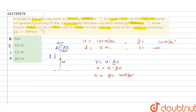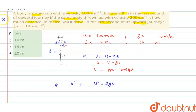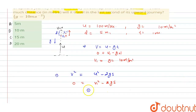We have time, initial velocity v1, final velocity, and g value. Using the kinematic equation v² equals u² minus 2*g*s: for this interval, 0 equals v1² minus 2*g*s. Rearranging, s equals v1² divided by 2g. Since v1 equals g, we get s equals g² divided by 2g.